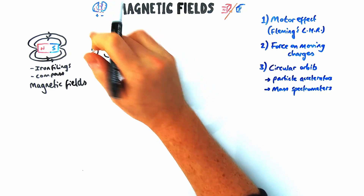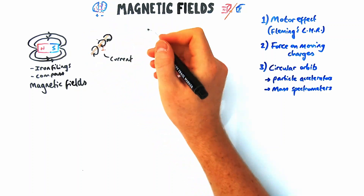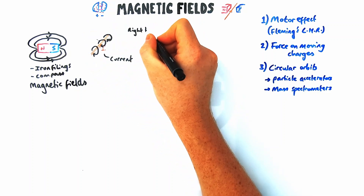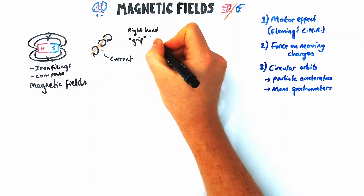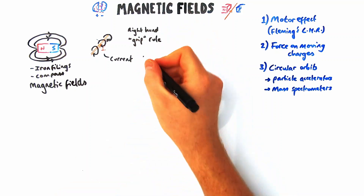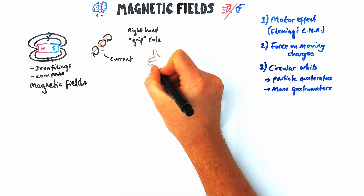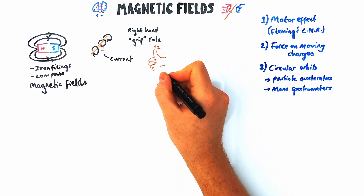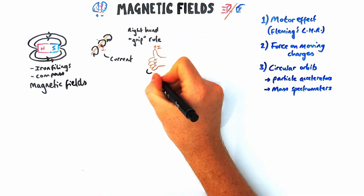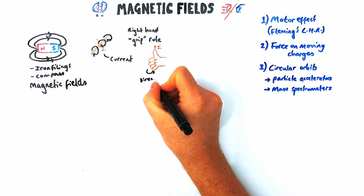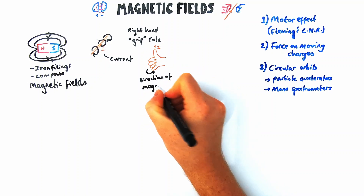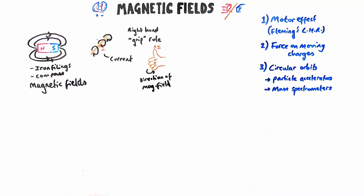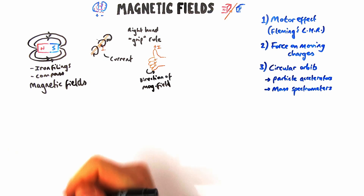If I've got some current flowing through this wire here I can find the magnetic field shape around it by using something called the right-hand grip rule. As you can see from the diagram, the magnetic fields form a circular pattern. If the wire is travelling in the direction that your thumb is travelling on your right hand, then your fingers curl in the direction of the magnetic field — so current is your thumb, fingers are the magnetic field.